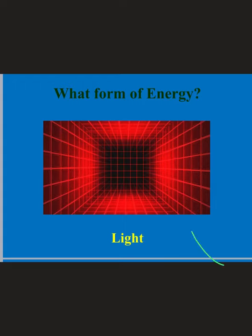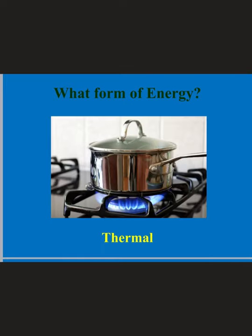Here's a good example of light energy — this is the color red, and if it was in a dark tunnel those red lights would be what we see — that's light energy. And here's a good example of thermal energy: the fire is transferring heat to the pot, and whatever is inside is getting cooked for some delicious food.